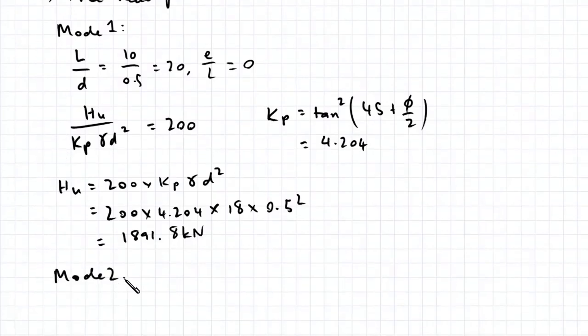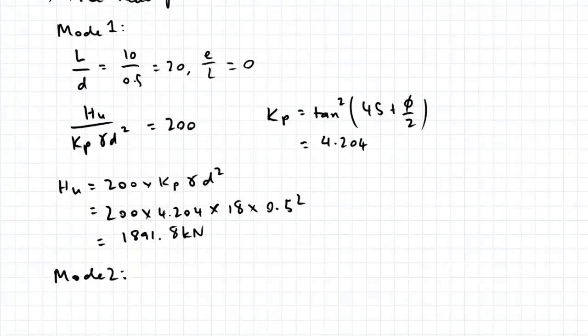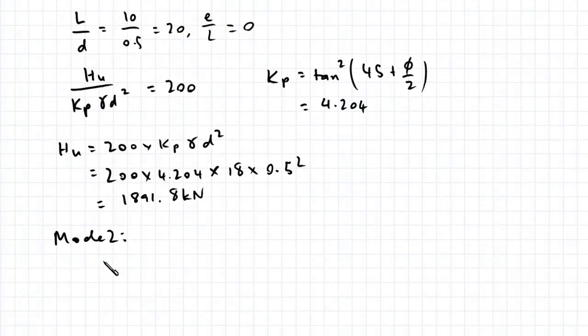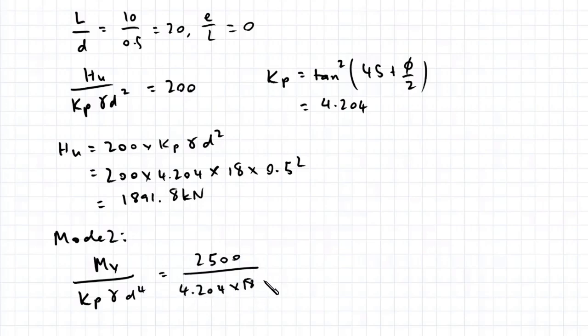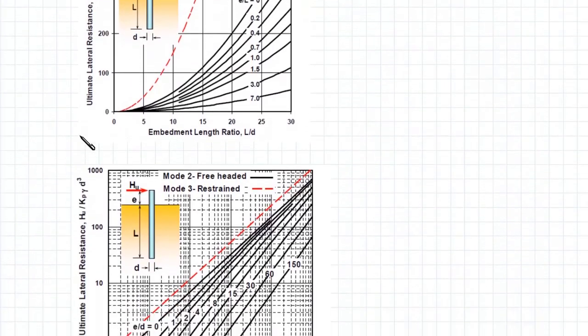Let's now look at mode 2. If we go to our chart, we need to determine this ratio here: MY divided by KP gamma D to the power of 4. That's equal to 2500 divided by 4.204 times 18 times 0.5 to the power of 4. This works out to be 528.6. And E on D is equal to 0. In this chart we're using E on D. The first chart was using E on L, so make sure you don't mix this up.